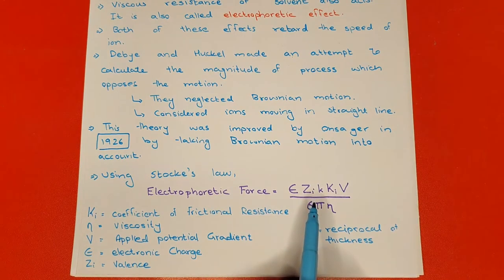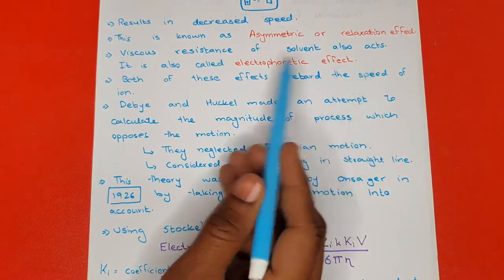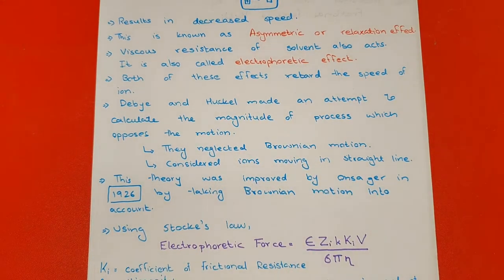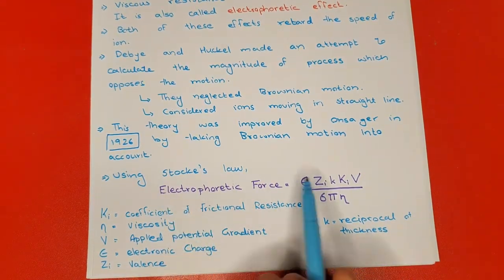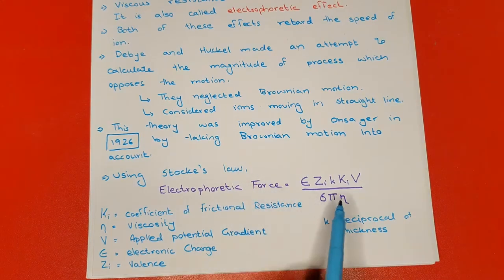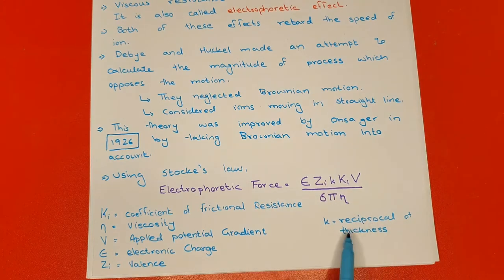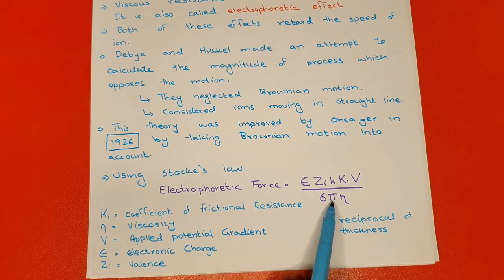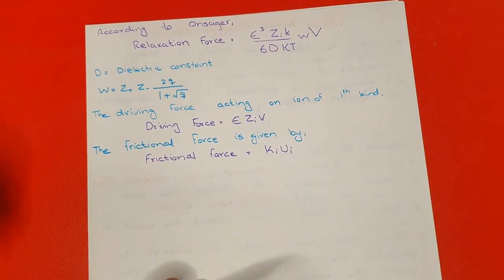Using Stokes' law, the electrophoretic force is given by the formula where e is the charge, z_i is the valence, k (small) is the reciprocal of thickness, K (large) is the coefficient of frictional resistance, v is the applied potential gradient, π is pi, and η is the viscosity.